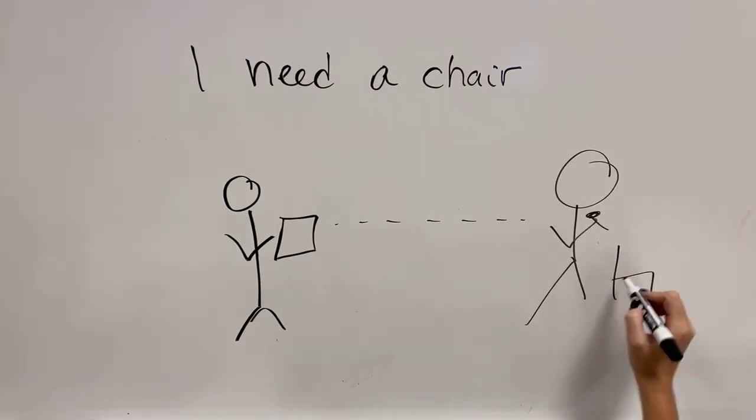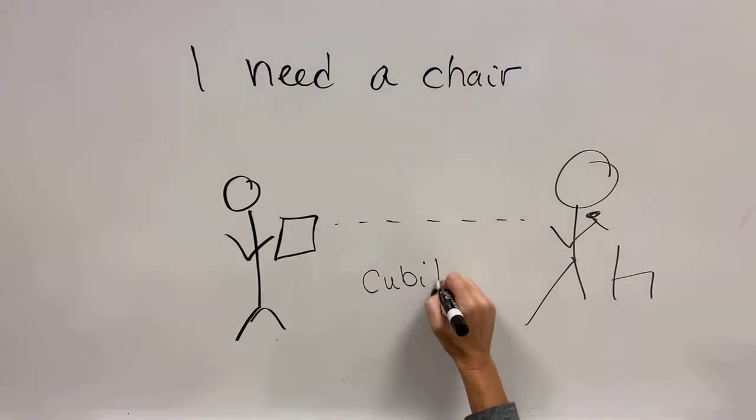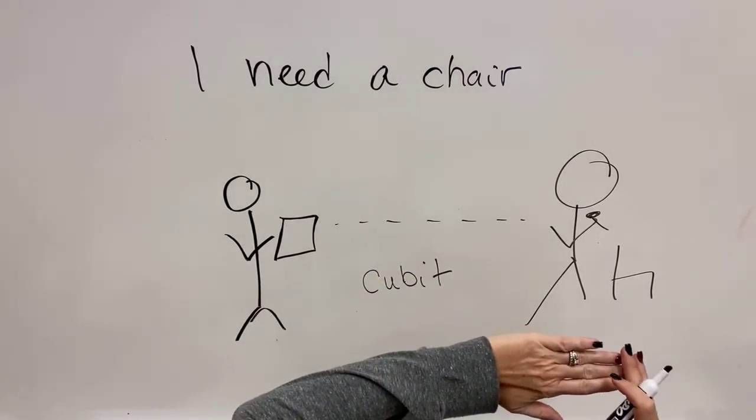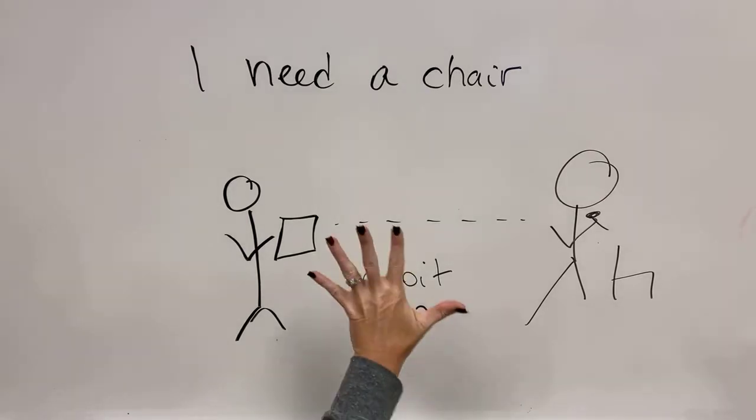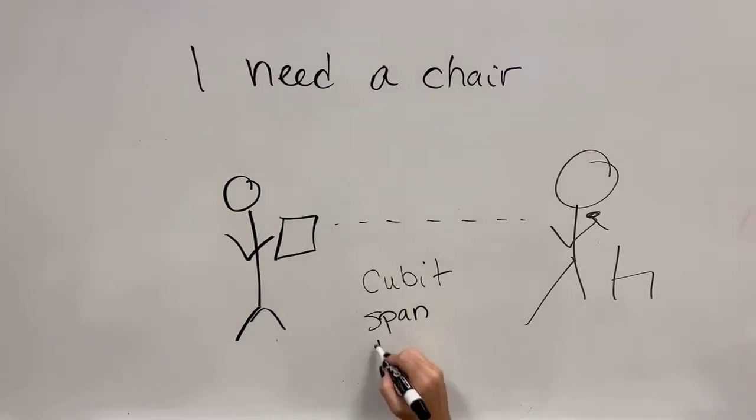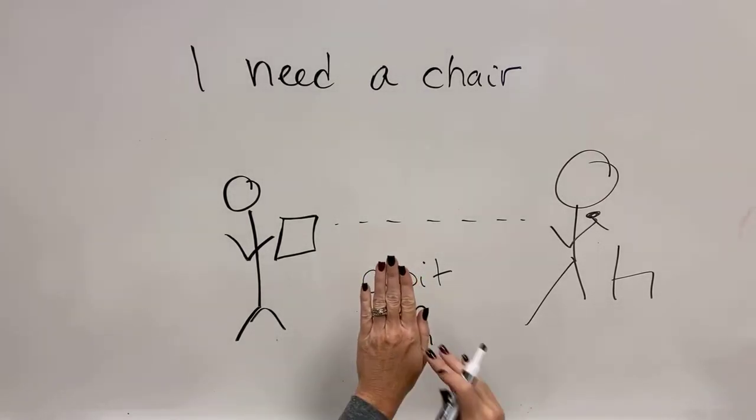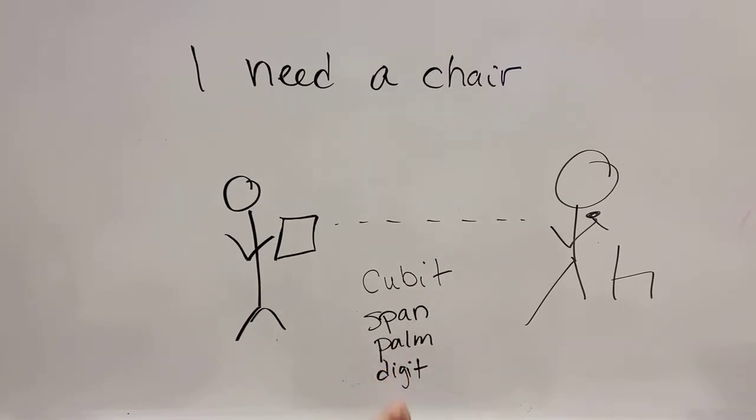And they're going to say to me, how big would you like your chair? And in that time, there are measurement systems like cubits, which is elbow to fingertips, span, which is the span of your hand, palm, which is the width of your palm, and digit, which is the width of your thumb.